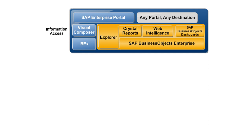Components of SAP BusinessObjects Enterprise include SAP BusinessObjects Analysis, SAP BusinessObjects Web Intelligence, SAP Crystal Reports, and SAP BusinessObjects Dashboards. SAP BusinessObjects Analysis is a web-based OLAP client with an advanced and highly intuitive user interface, offering multiple connections to multiple OLAP servers. It is designed for business analysts to analyze OLAP data and for end-users to review OLAP data.